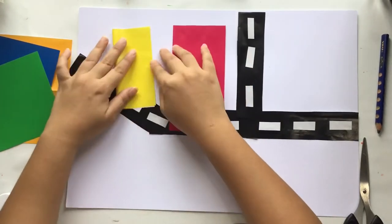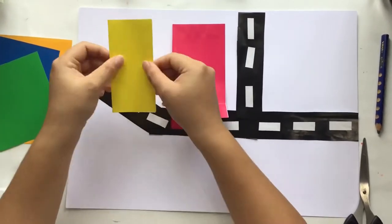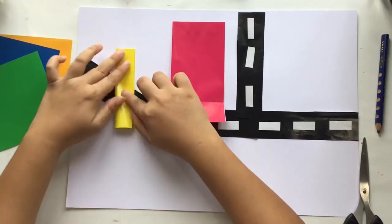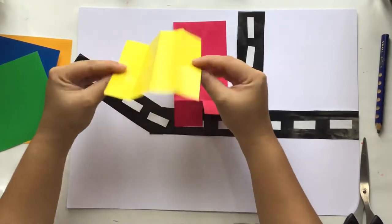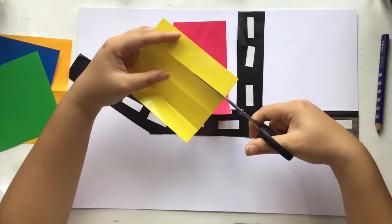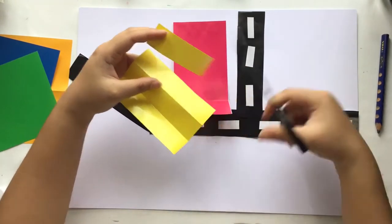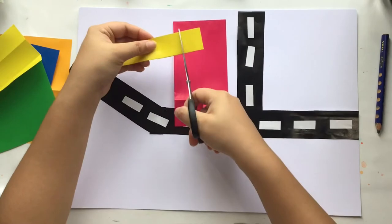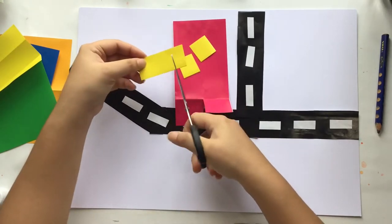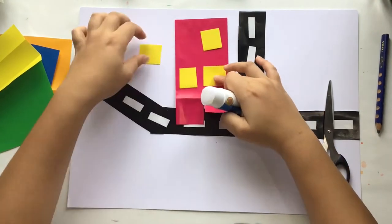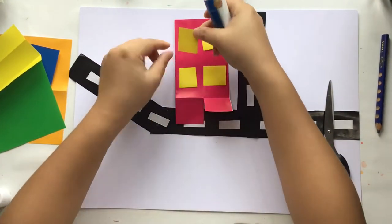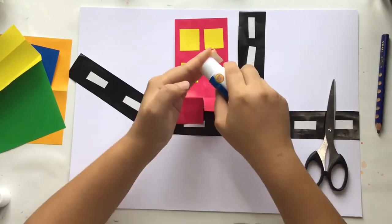For the windows and doors, you can use other colors of origami paper. You can fold it into smaller stripes and then cut it following the shape that you want—could be a square, maybe a rectangle, or circle. Now you can place the windows and doors and paste them with glue.